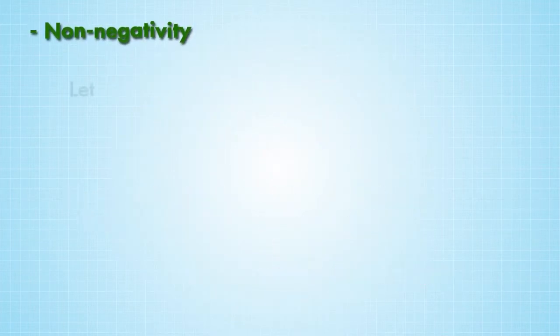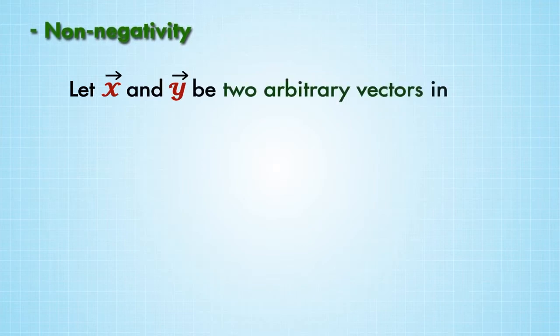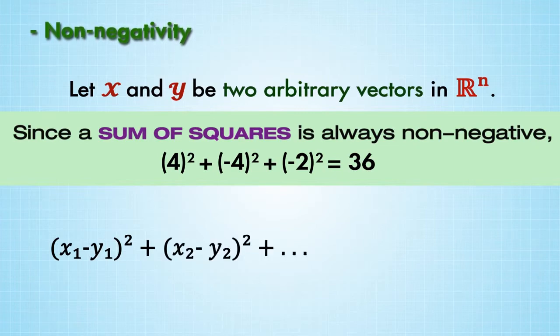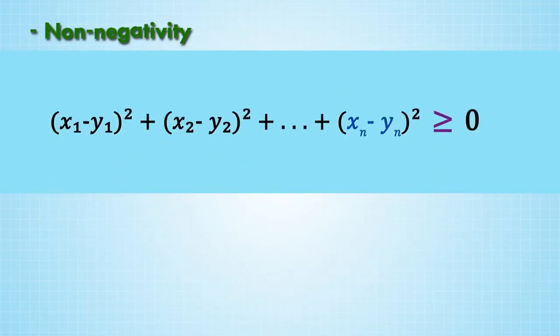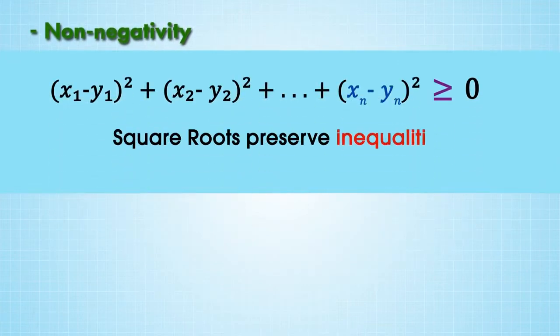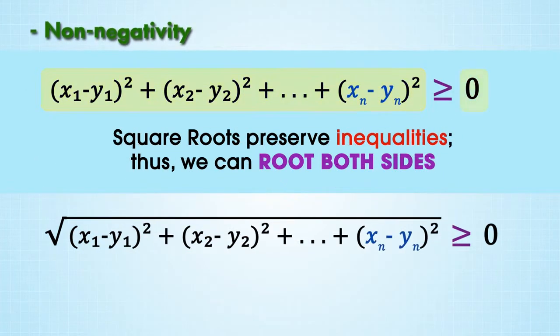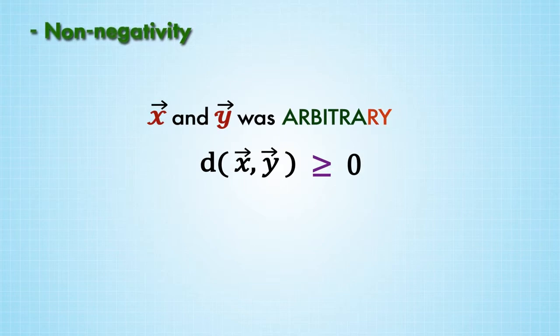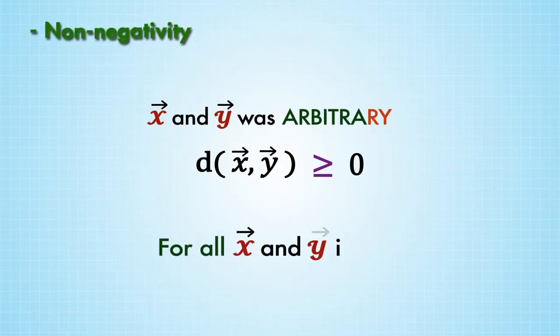Non-negativity. Let x and y be two arbitrary vectors in R^n. Since a sum of squares is always non-negative, (x1 minus y1) squared plus (x2 minus y2) squared up to (xn minus yn) squared is greater than or equal to zero. Square roots preserve inequalities, thus we can root both sides. But this says d(x,y) is greater than or equal to zero. Since the choice of x and y was arbitrary, d(x,y) is greater than or equal to zero for all x and y in R^n.